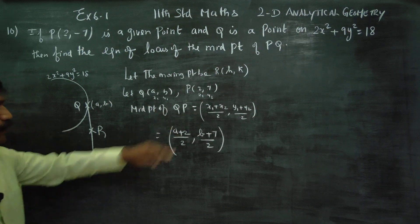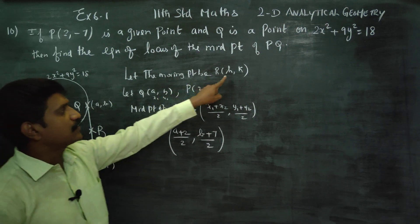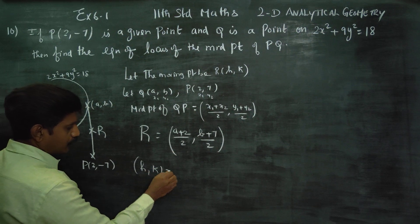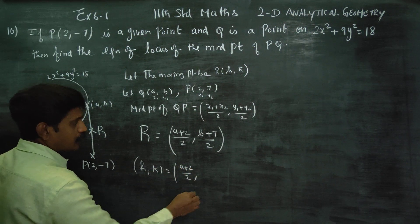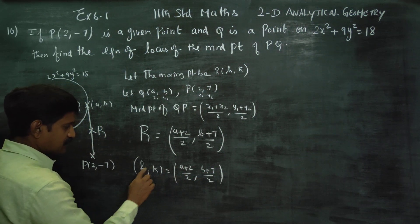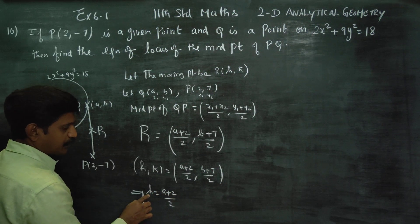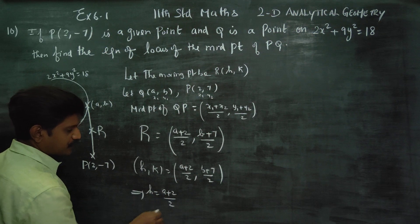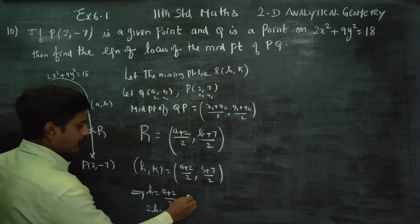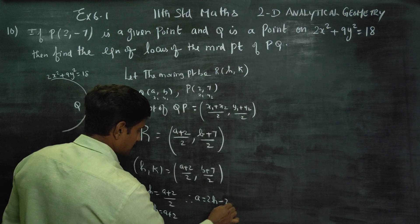This gives us the midpoint of QP, which we named R = (h, k). So h = (a + 2) / 2, and k = (b - 7) / 2. Cross multiplying: 2h = a + 2, therefore a = 2h - 2.